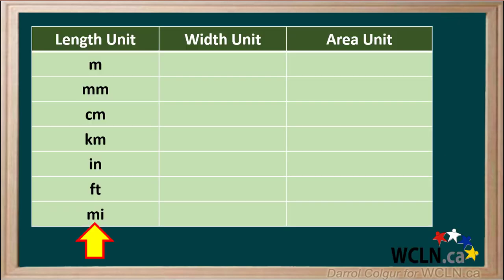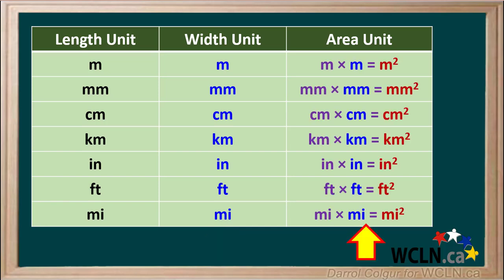Looking on this table we can see that we can use a variety of length and width units, both metric and imperial. As long as we use the same unit for width as we do for length, the unit for area will always be the length unit squared, as we can see here.